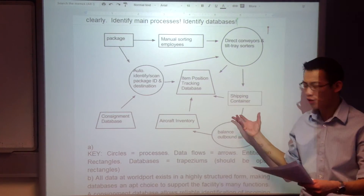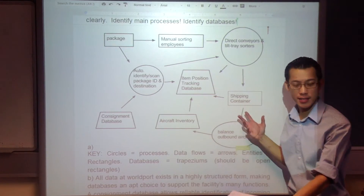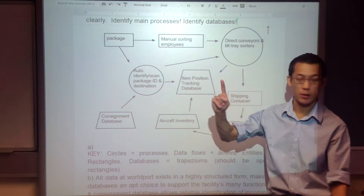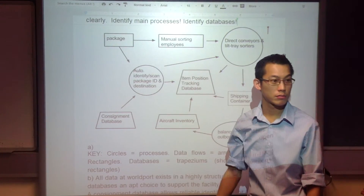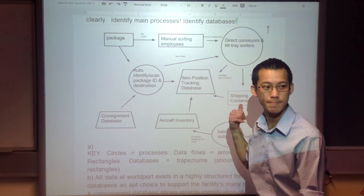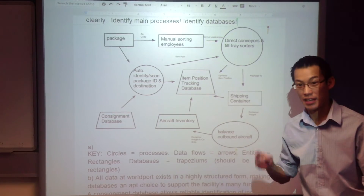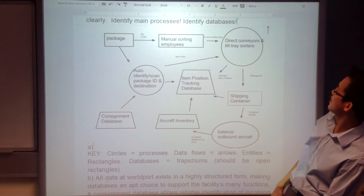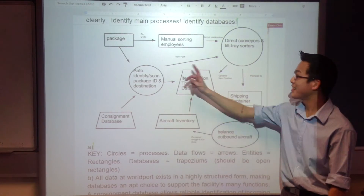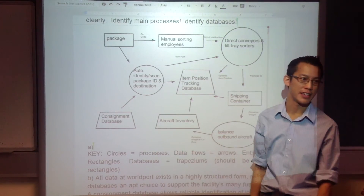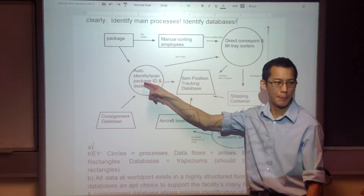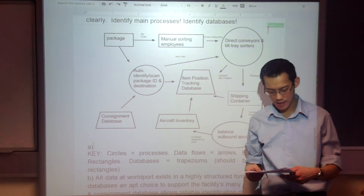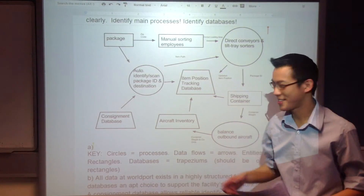I think that's generally the idea. If you had this — the data flows are meant to be labeled — that was three marks, and then the one mark was for labeling the data flows. Any questions on that? The key really was, once you get the processes, the rest kind of falls into place, because you think: what's going to happen, where am I going to get the data from? It's got to be from this source and that source. All right, let's move on.